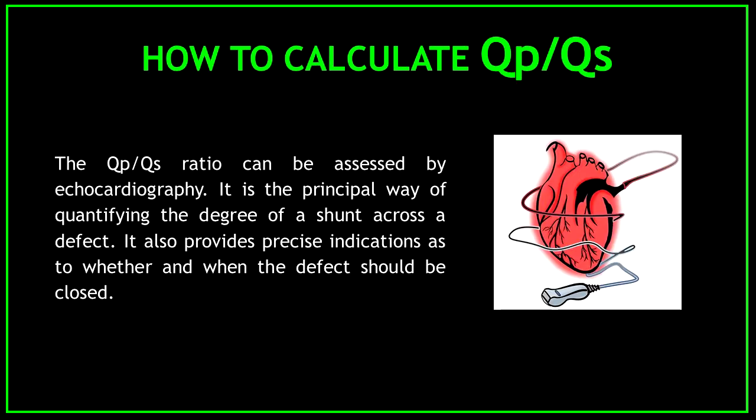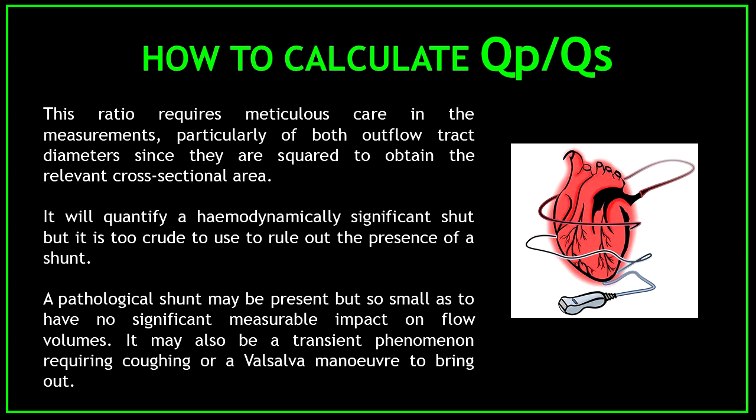How to calculate the QPQS? The QPQS ratio can be assessed by echocardiography. It is the principal way of quantifying the degree of a shunt across a defect and provides precise indications as to whether and when the defect should be closed. This ratio requires meticulous care in the measurements, particularly of both outflow tracts' diameter, since they are squared to obtain the relevant cross-sectional area. It will quantify a hemodynamically significant shunt, but it is too crude to use to rule out the presence of a shunt.